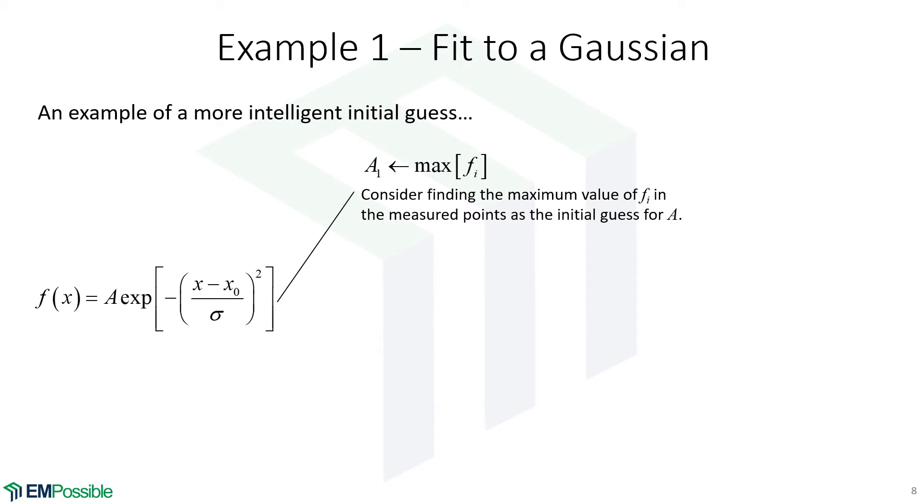A slightly more intelligent thing might be to find the maximum and minimum, and the difference between those two is A. So give that some thought. Look at your data and see what you can come up with to make a really good guess of what the amplitude is.